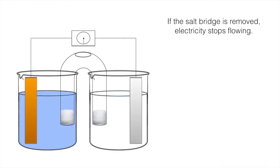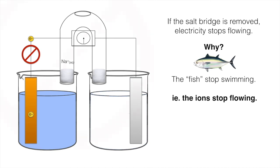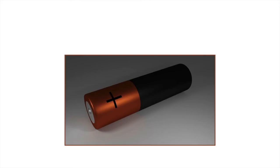Now why is the salt bridge so important? Well, watch what happens. If the salt bridge is removed, then electrons actually stop flowing. And why does that happen? Well, it's because the fish stops swimming. If the ions stop flowing, everything stops. So there needs to be an electron flow and an ion flow for this to work. If the ions can't flow through the salt bridge to balance the charge, the circuit is broken. Okay.